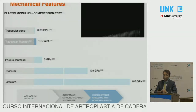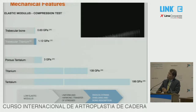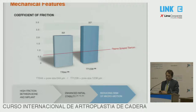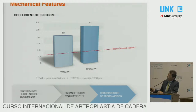The mechanical features are extremely good. The benchmark is always tantalum, the trabecular metal. You can see the elasticity comparison: this is titanium, this is tantalum, this is porous tantalum, and this is trabecular titanium. It's very elastic. The coefficient of friction is very high, and this is the 640 micron porosity.